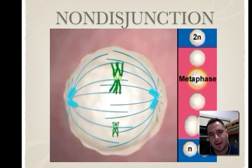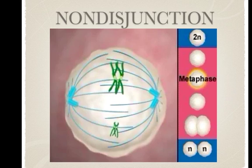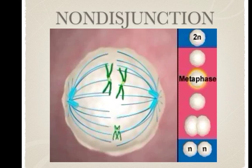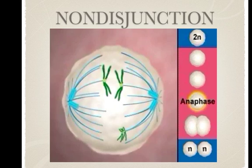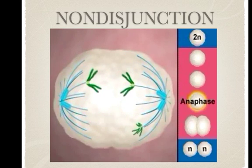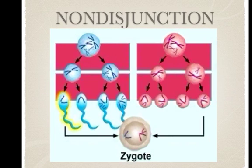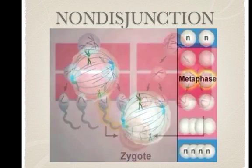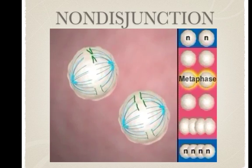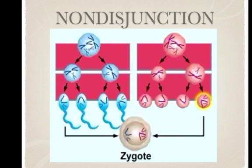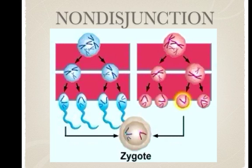Now let's talk about non-disjunction. Sometimes chromosomes do not separate properly during cell division — this is called non-disjunction, and it can happen in both males and females. Non-disjunction causes gametes to have an abnormal number of chromosomes. It can happen during meiosis I when homologous chromosomes fail to separate, or during meiosis II when chromatids fail to separate. A zygote receiving three of one chromosome is called trisomy, while a zygote with only one copy is called monosomy.